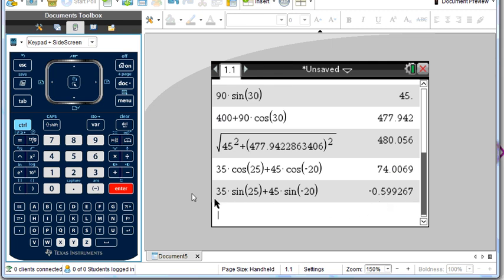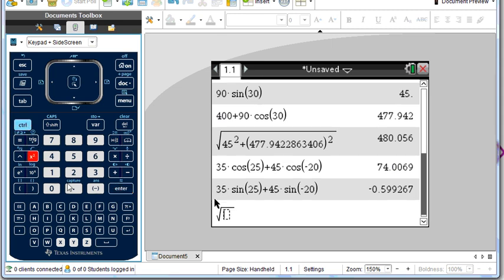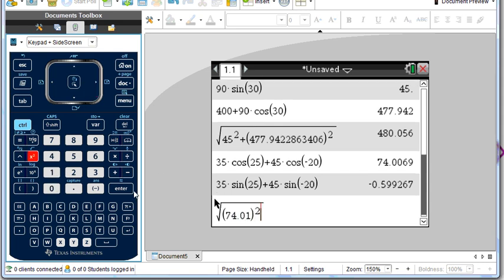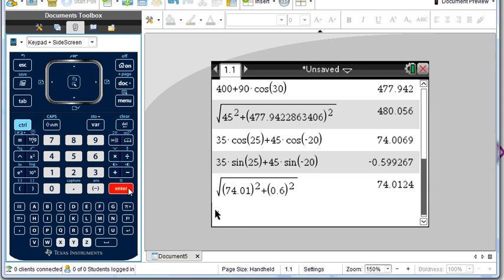And so to find our magnitude, we're going to take the square root. We're going to take 74.01 roughly, squared, and if we understand the magnitude of this function, we could stop right there. But we're going to add negative 0.6 squared. So we're going to get essentially 74.01 newtons.